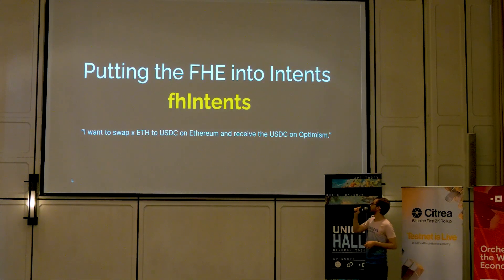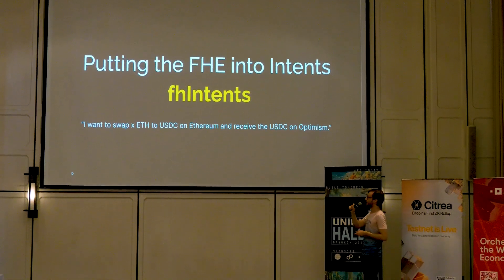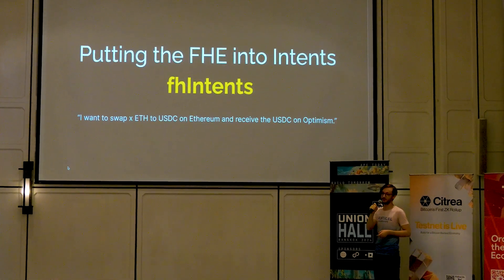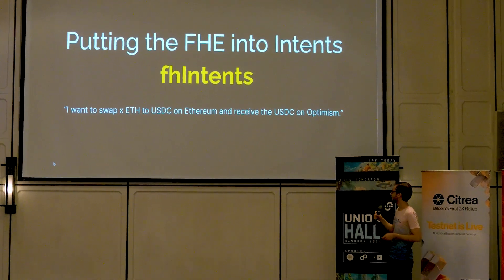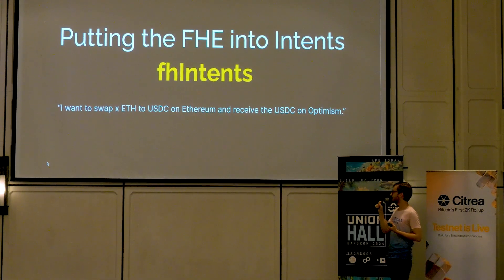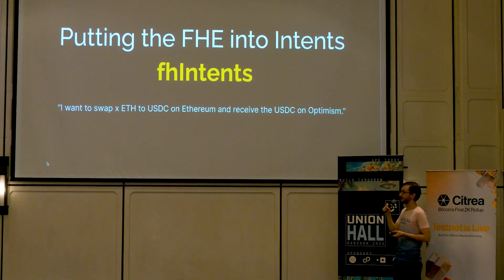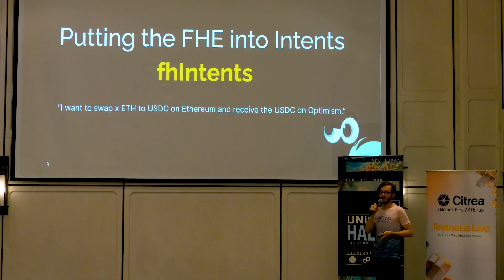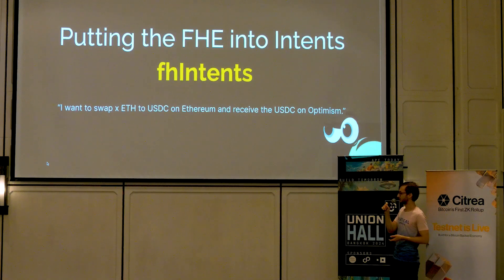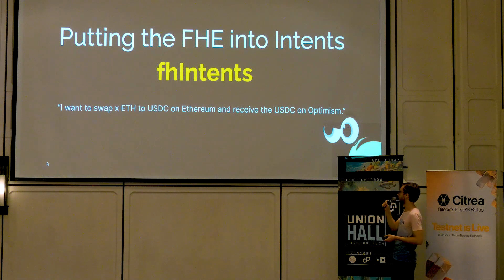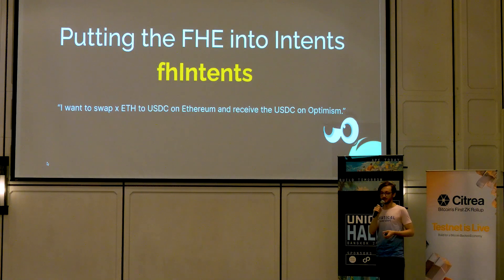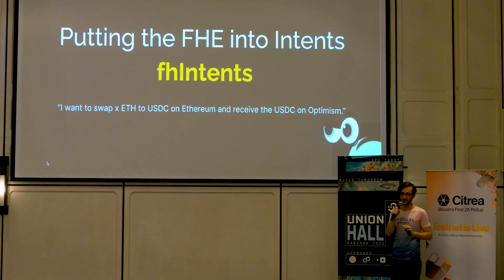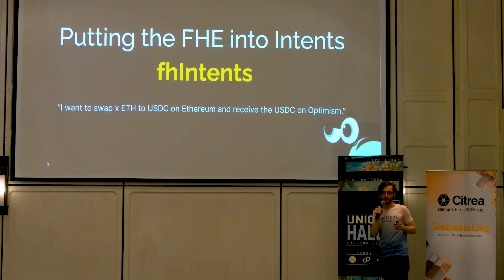As Fluton, we decided to put FHE into intents and call it FHE intents. As an example, you can say: 'I want to swap X ETH to USDC on Ethereum and receive the USDC on Optimism.' This X represents the encrypted part. You might think of Tornado Cash from this example, because you're hiding the details of the transaction — nobody knows how much ETH the person is transferring or swapping. It might sound like Tornado Cash, but it's actually a much more different system, which I'll address in a later slide.